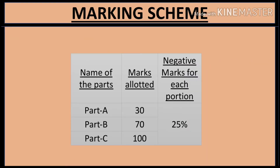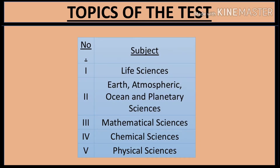Looking at the marking scheme: Part A carries 30 marks, Part B carries 70 marks, and Part C carries 100 marks. The negative marking for each wrong answer is 25%, which is one-fourth of the marks allotted to that question.